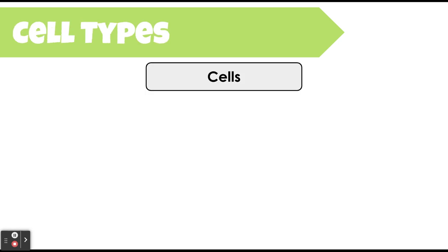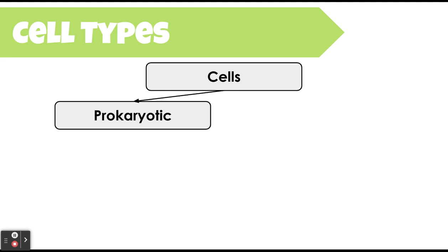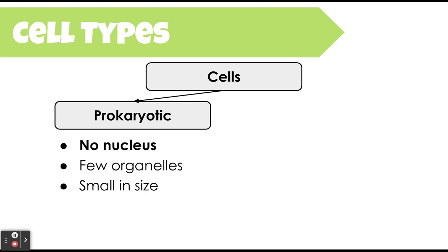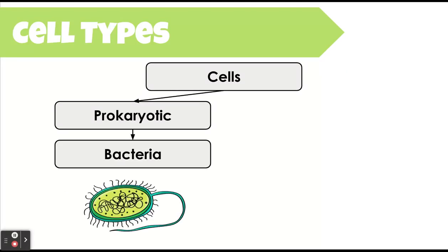To categorize cells, every living cell can be split into one of two categories. The first is prokaryotic, also known as prokaryotes. A prokaryotic cell is a type of cell that has no nucleus in it. A nucleus is one of the organelles we're going to talk about — if you remember from middle school science, it's where genetic material is typically found. Prokaryotic cells do not have a nucleus, they have very few organelle structures, and they're very simple and small in size. An example of a prokaryotic cell would be bacterial cells.